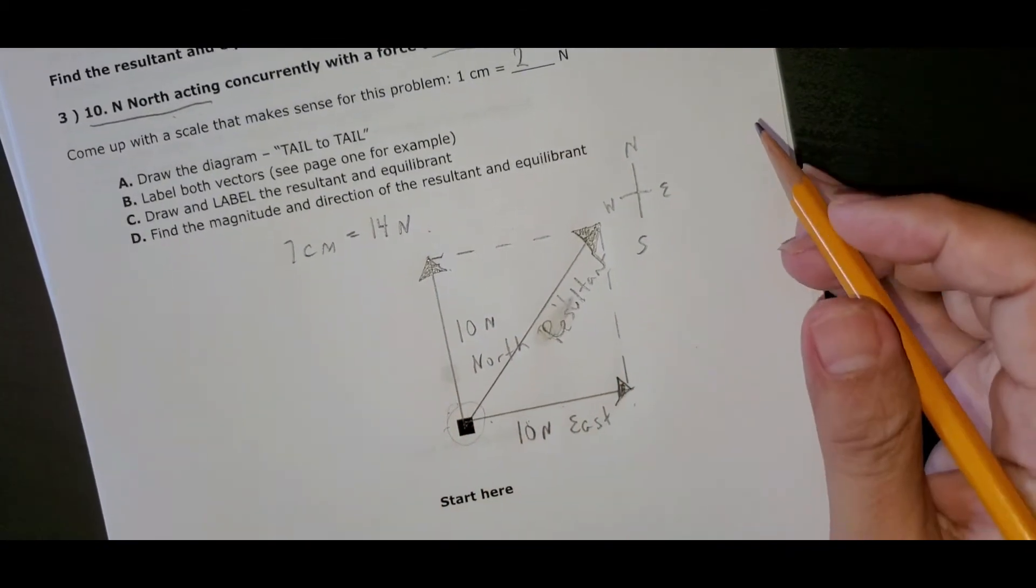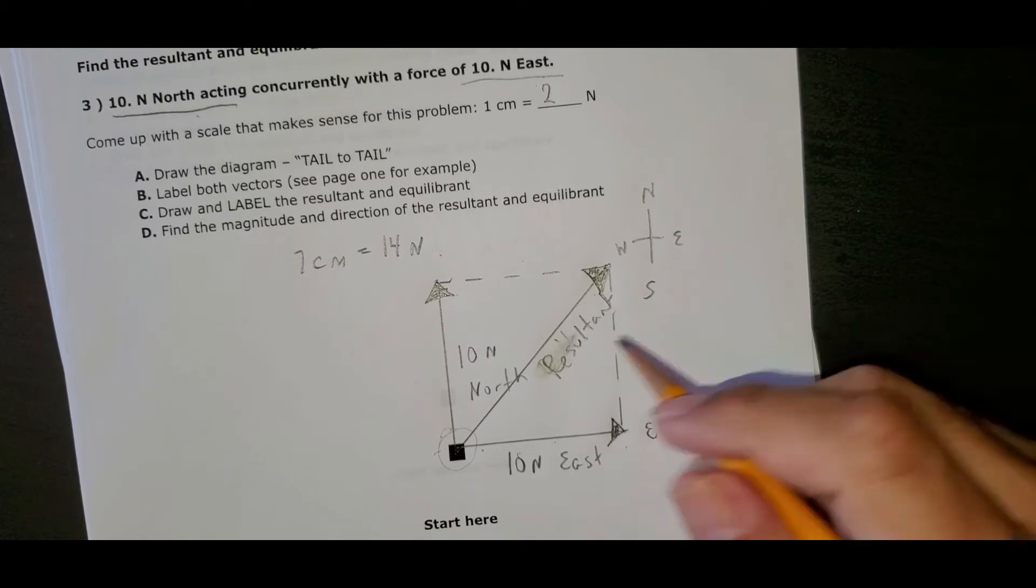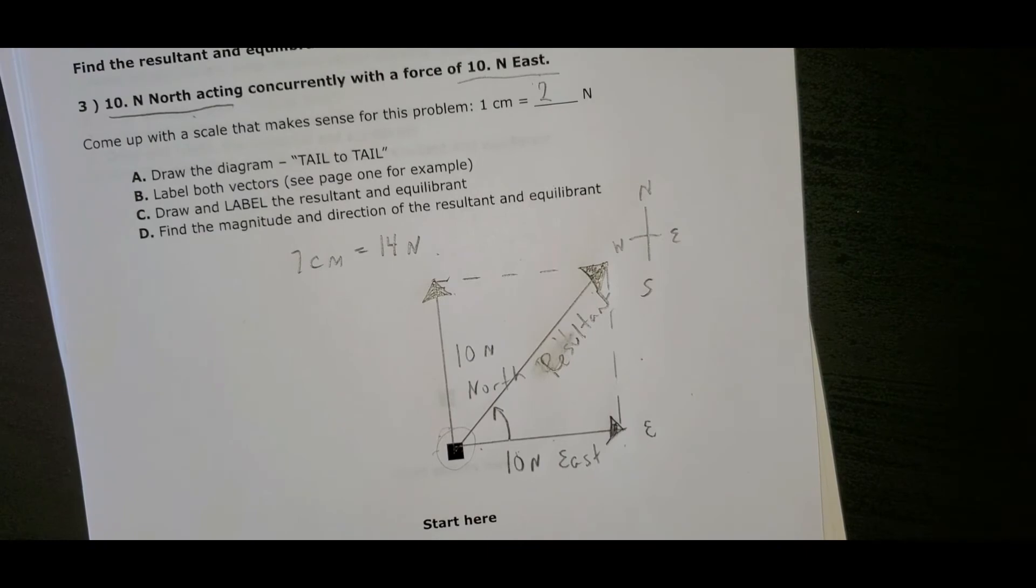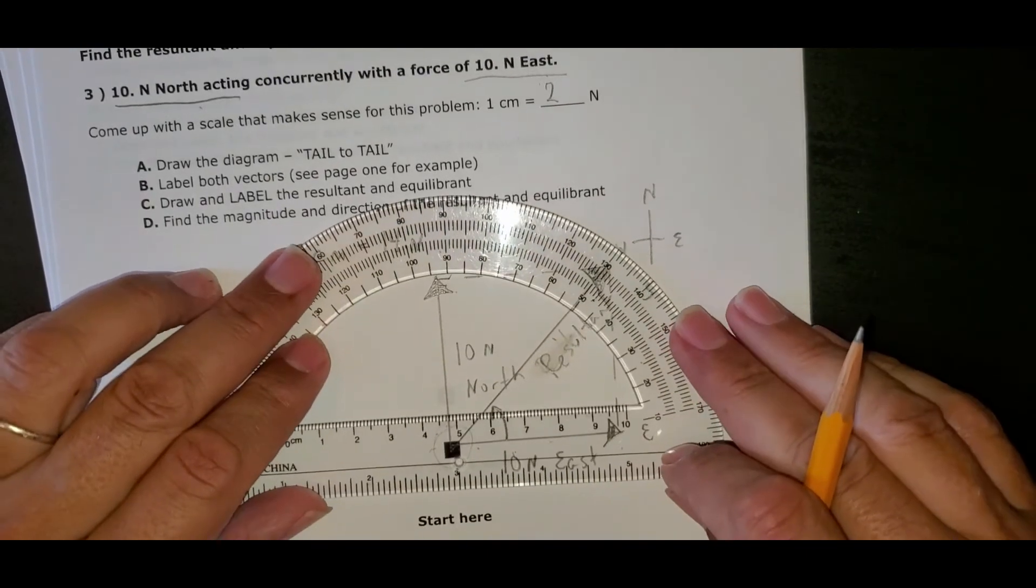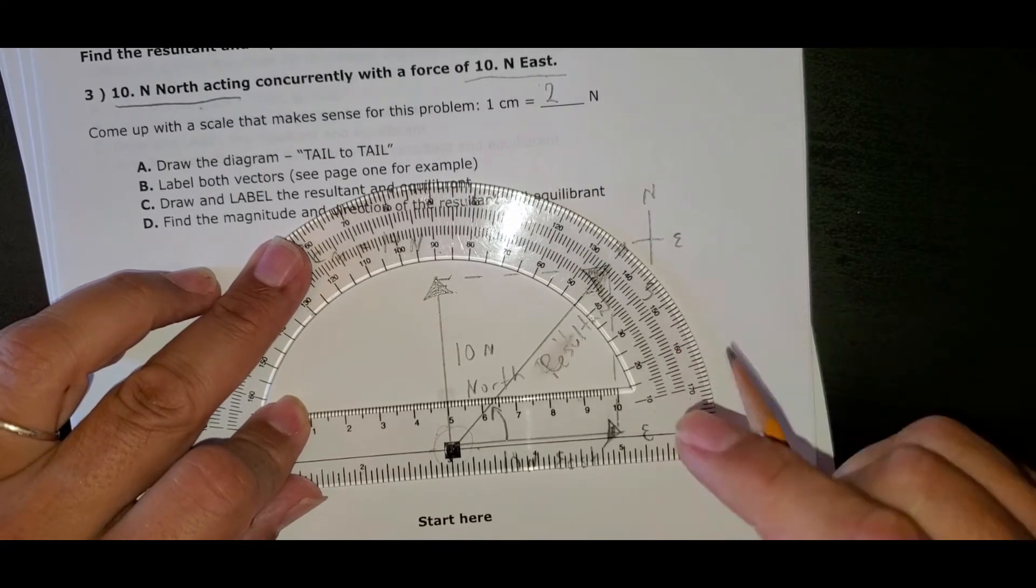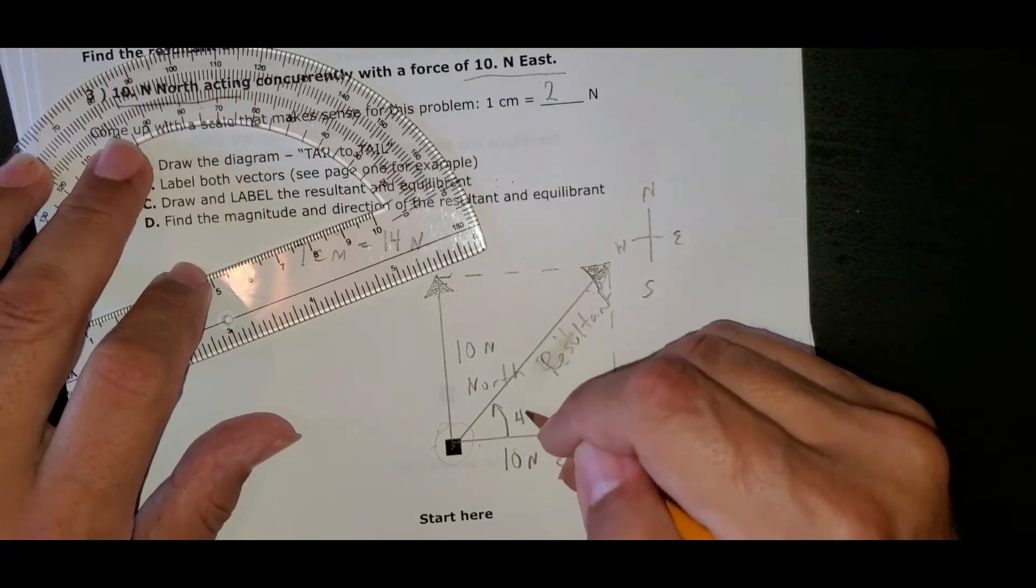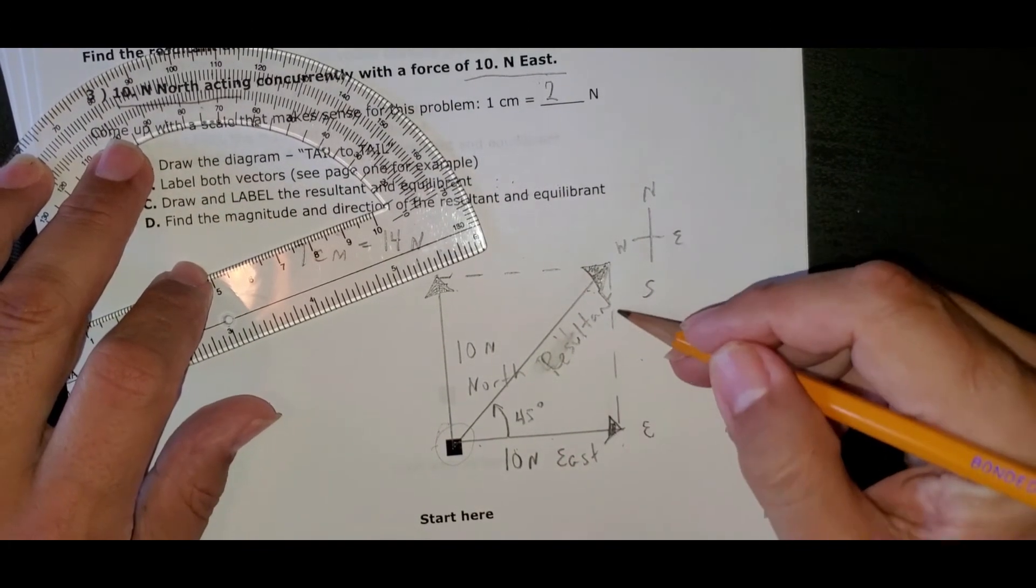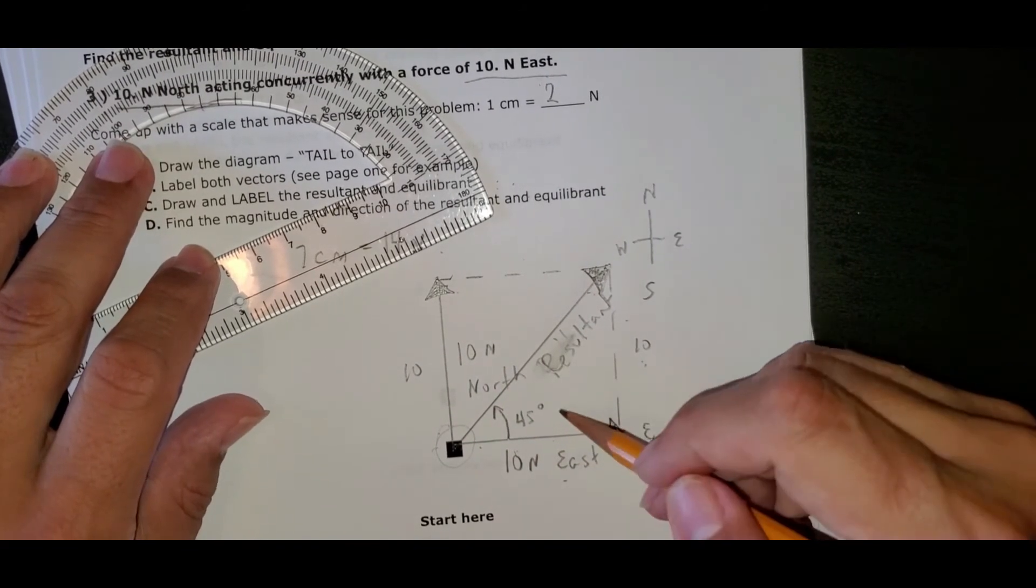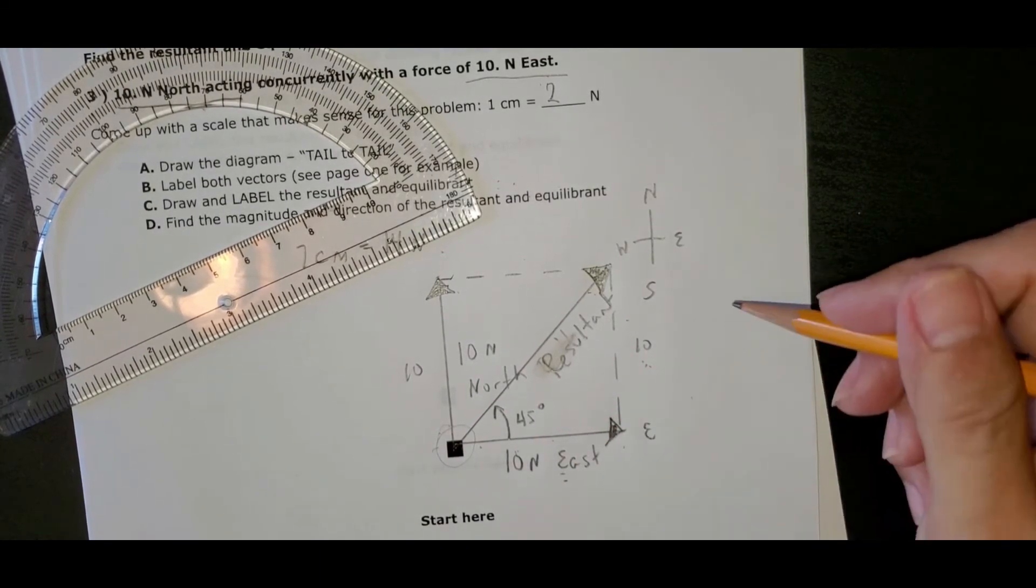But forces are vectors, so we have to find the direction. The way that we find the direction is always find the angle between the resultant and either east or west. This is close to east, so I have to find this angle right in here with my protractor. Put this right in the middle of the box. Is that 45 degrees? No surprise, right? That's 45 degrees. Because if this is 10, then this is 10, and these two are 10. The inverse tangent of 10 over 10, inverse tangent of one is 45 degrees.